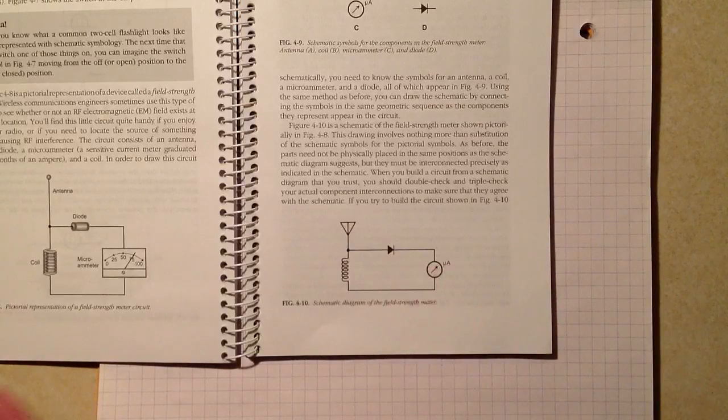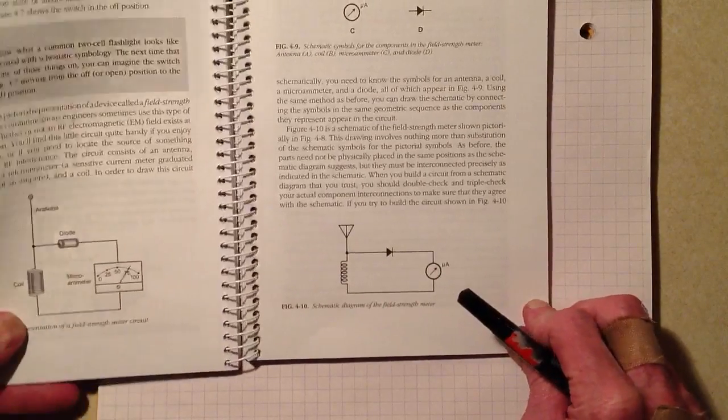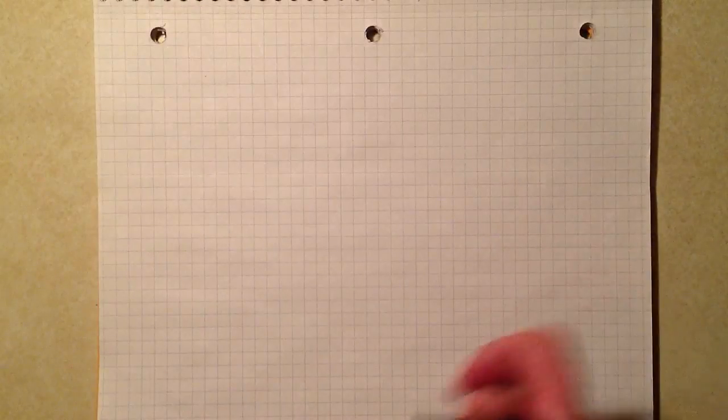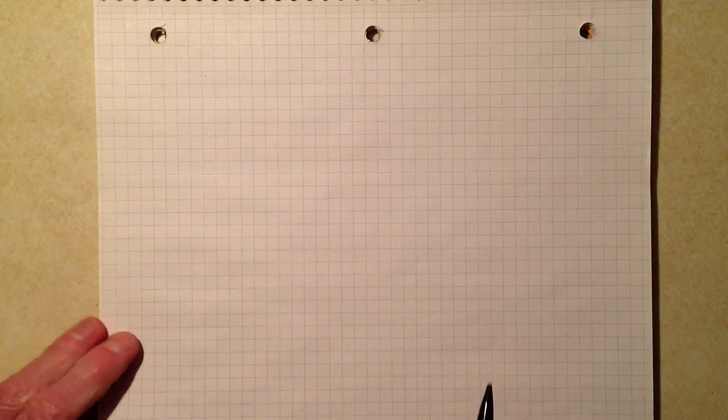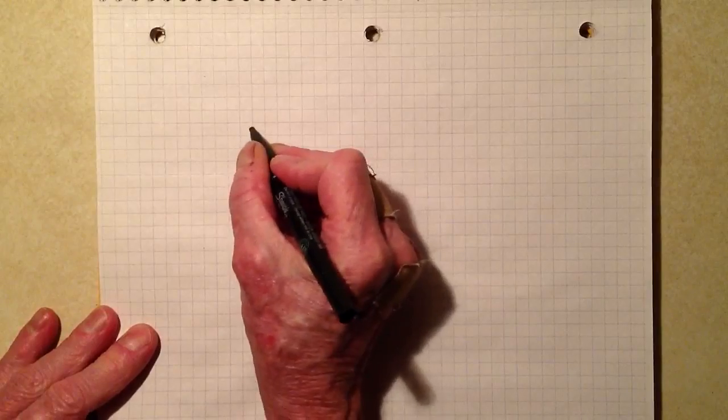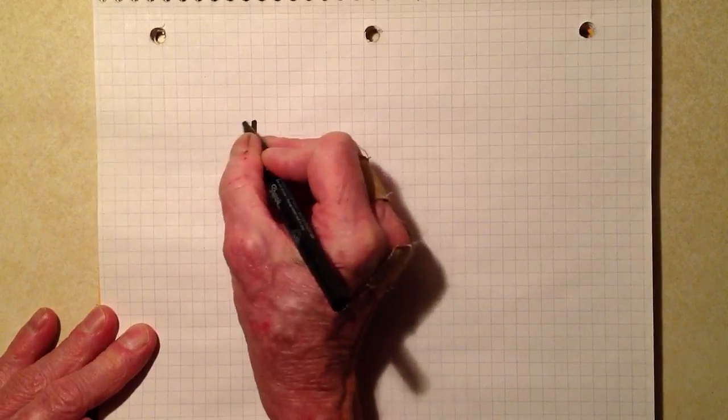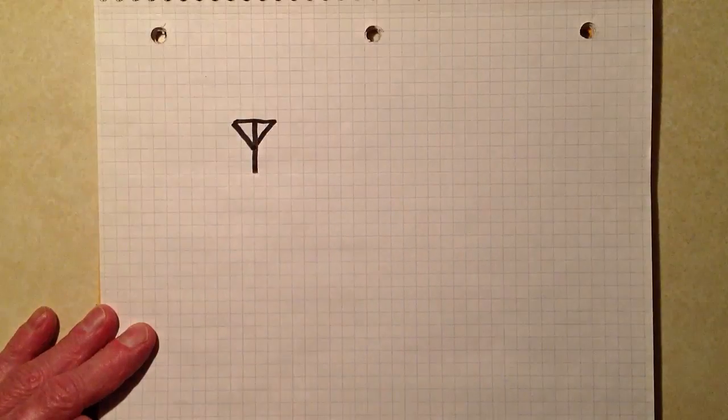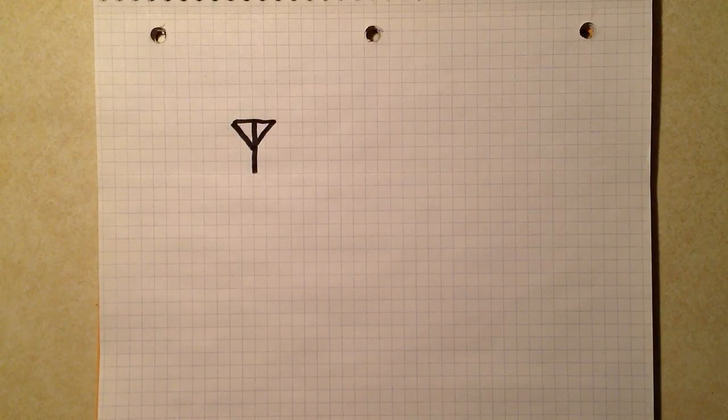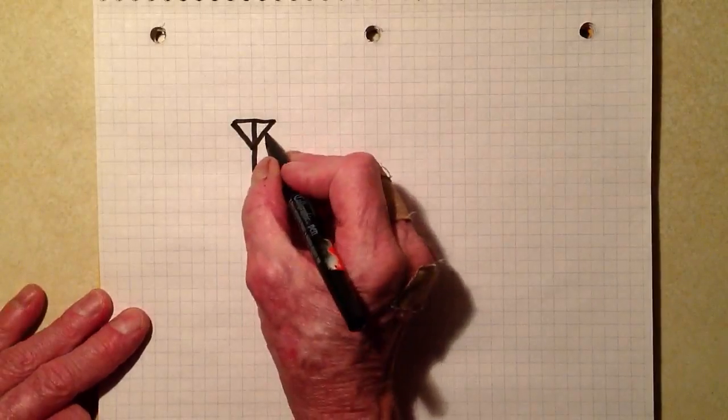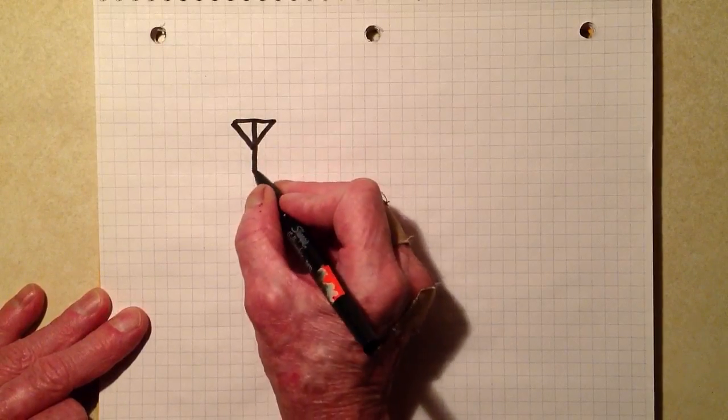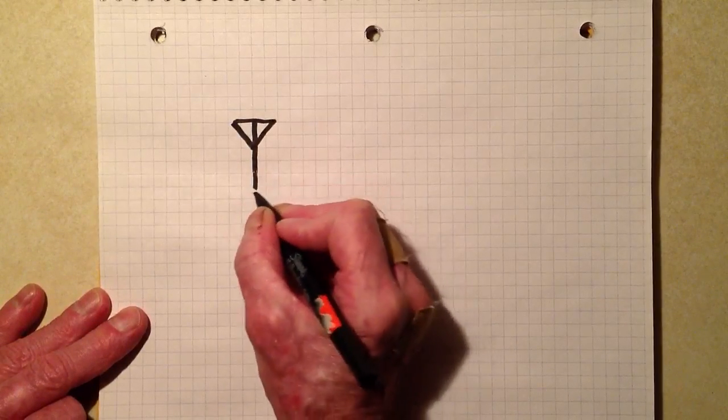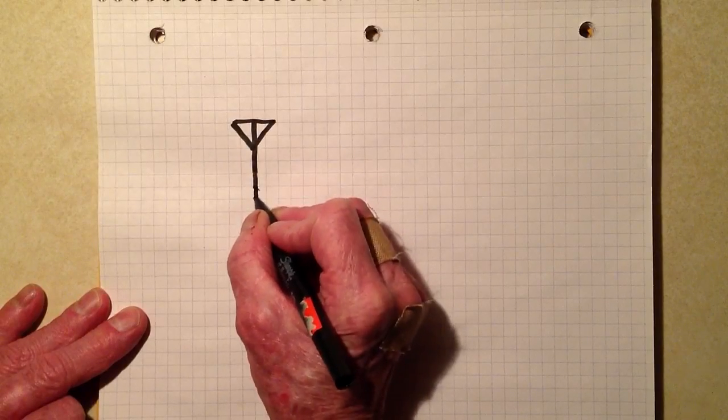What I'm going to do is draw this diagram of a field strength meter for you now on quadrille paper. I've discussed the advantages of using quadrille paper for drawing schematics. I'm going to actually draw that diagram, redraw it, just as it appears in the book. There is an antenna, probably a short whip antenna will do the job here.